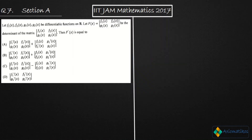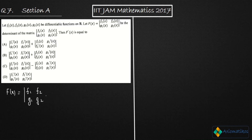So what you have is capital F(x) function. F(x) is the determinant of [f1, f2; g1, g2]. Now just use the property of the determinant — expanding it gives you f1·g2 minus f2·g1. This is what you will get.